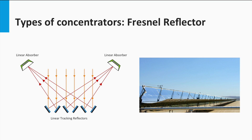Fresnel reflectors are similar, but use thin flat mirrors instead, in order to concentrate sunlight onto the tubes in which the fluid is pumped. Flat mirrors allow more reflection in the same amount of space as parabolic mirrors, reflecting more sunlight and are much cheaper.